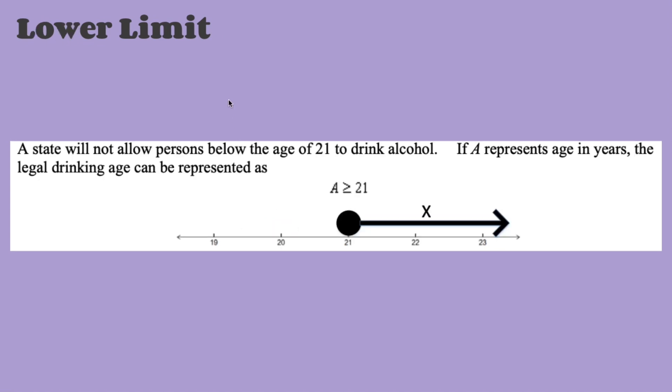For a lower limit, it's just going to be the opposite. In this problem, it says a state will not allow persons below the age of 21 to drink alcohol. If A represents age in years, the legal drinking age can be represented as... Here, what it's telling us is that anybody below the age of 21 cannot drink alcohol. So if you're 21 and older, you can drink alcohol. So our inequality will be A, age, is greater than or equal to 21.